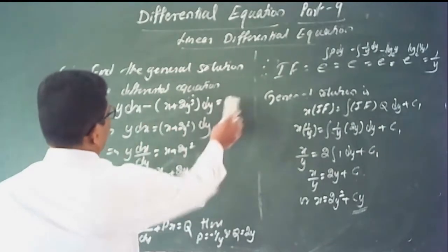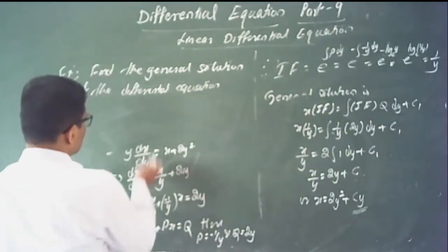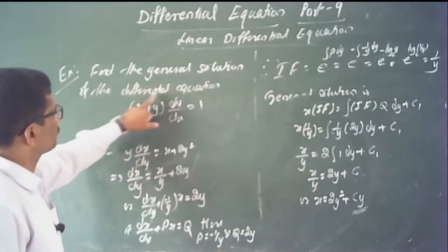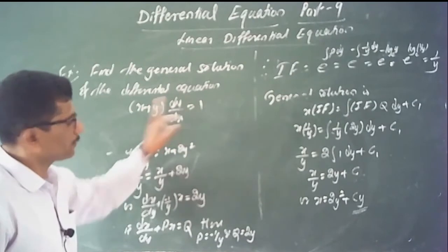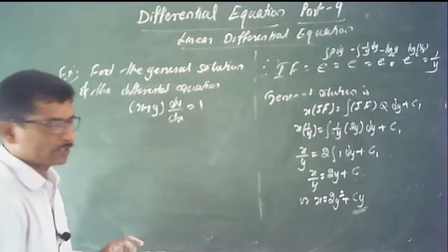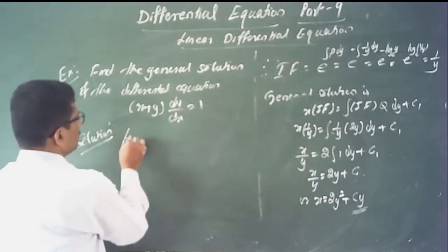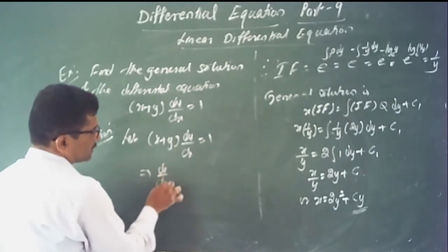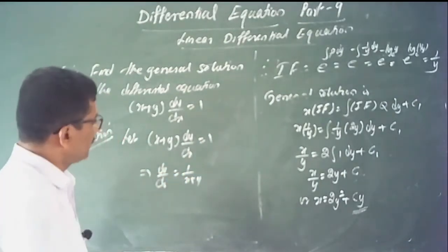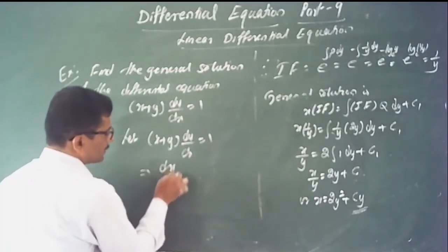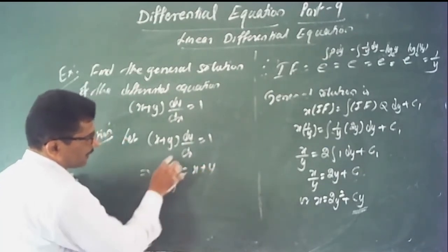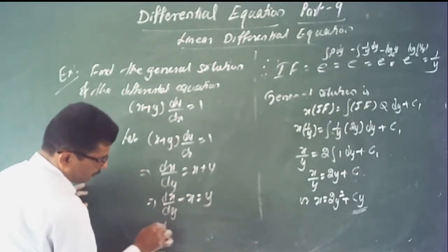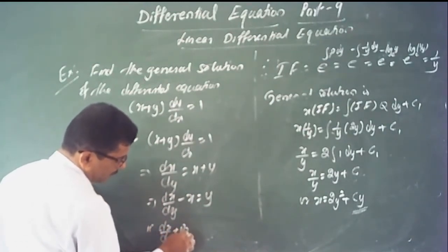One more problem: find the general solution of (x plus y) dy/dx equals 1. Here, rewriting dy/dx equals 1/(x plus y) is not in standard form. Instead, write dx/dy equals x plus y, then rearrange to dx/dy minus x equals y, which is in the form dx/dy plus p times x equals q with p equals minus 1 and q equals y.